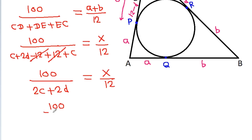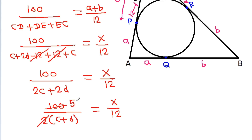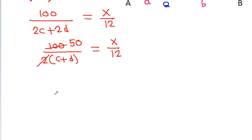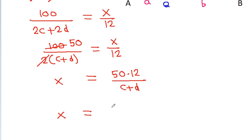And it is 100 divided by 2 times (c plus d) equals x divided by 12. So x will be equal to 50 times 12 divided by (c plus d). So x equals 600 divided by (c plus d).